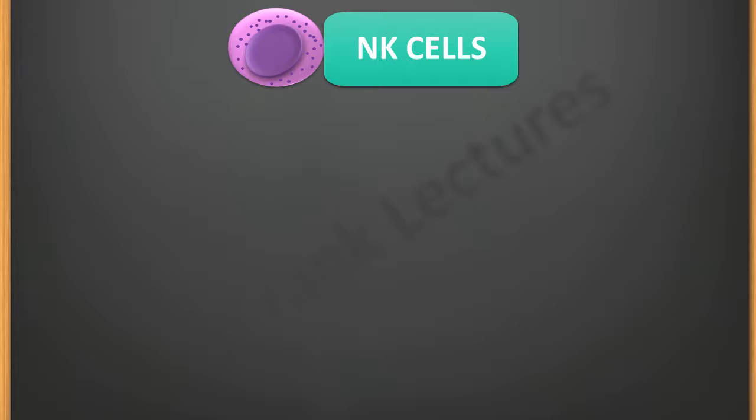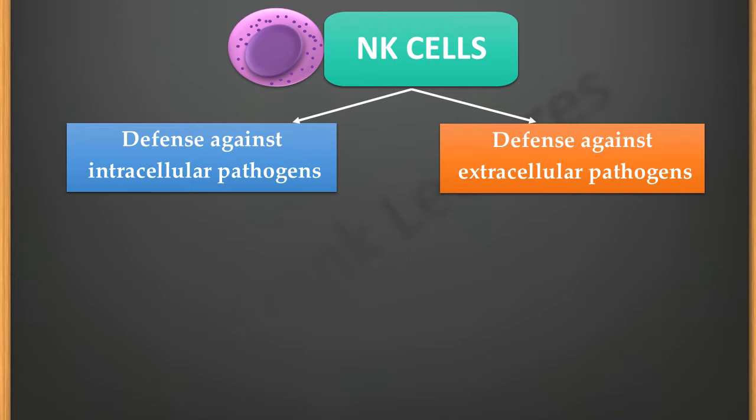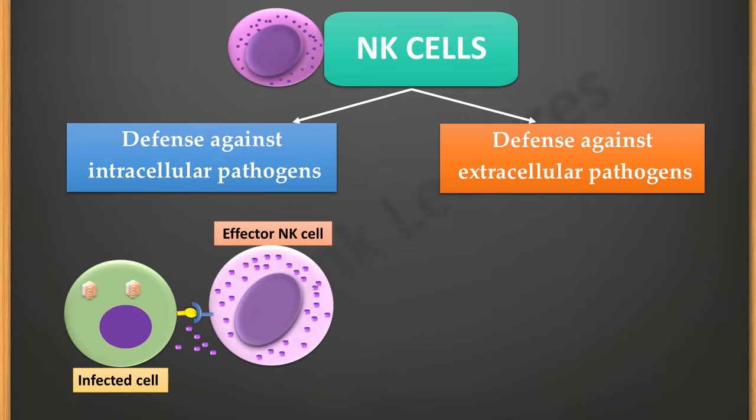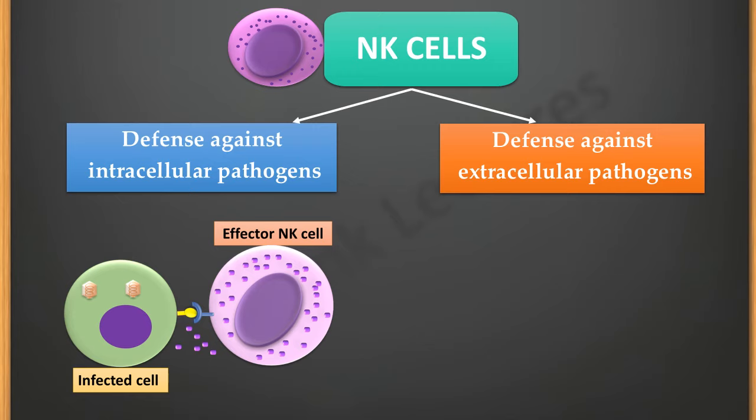In summary, natural killer cells provide defense against both intracellular and extracellular pathogens. In the case of intracellular pathogens, NK cells are directly involved, but they provide defense against extracellular pathogens indirectly.